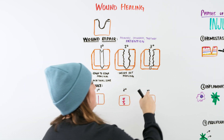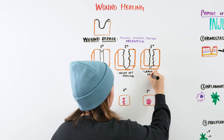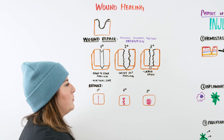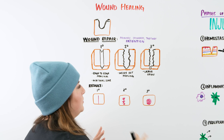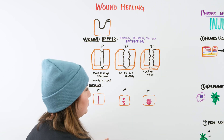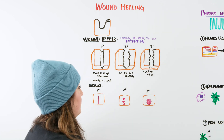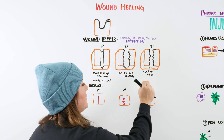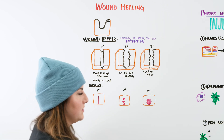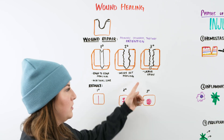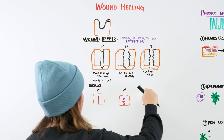Tertiary intention means we're going to leave the wound open on purpose — again to avoid creating a pocket of bacteria underneath the skin. We leave it open and allow it to heal from the inside out. This would be something like a dog bite, cat bite, or a deep puncture wound. The patient may also get a wound vac, and daily or every-other-day debridements to make sure that the wound is really cleaned out.